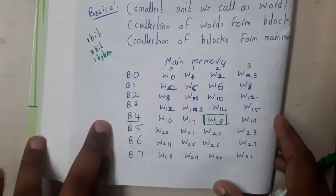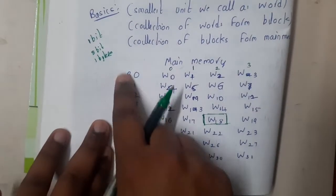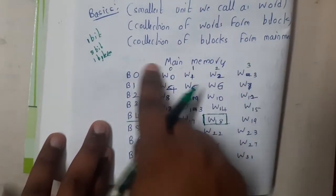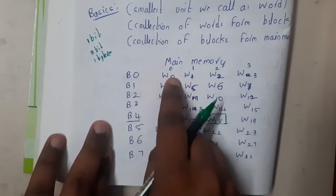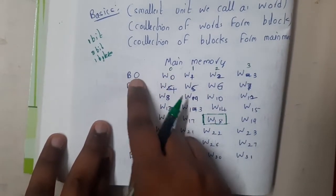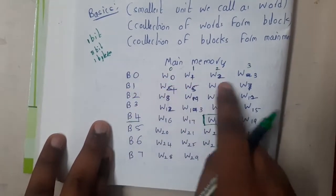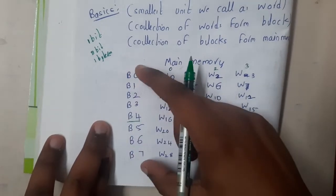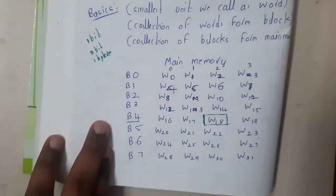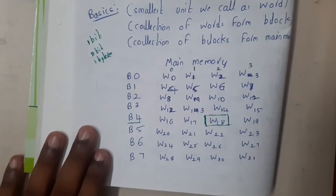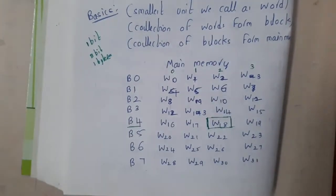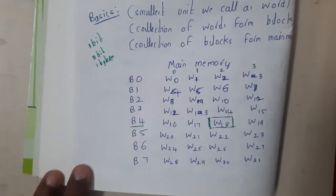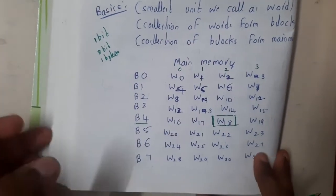If I draw a diagram, the entire structure represents main memory. Within it are blocks, and within each block are words. In block B0 there are four words, and in main memory there are eight blocks. This is how storage is structured internally.